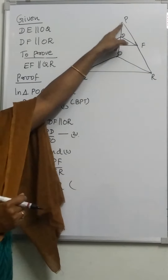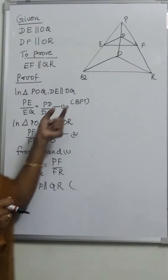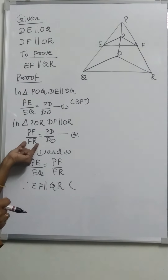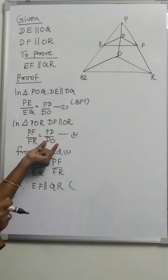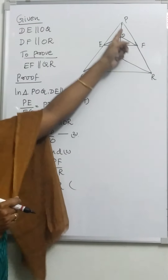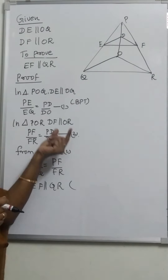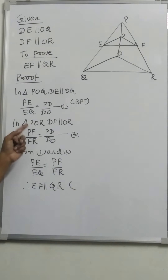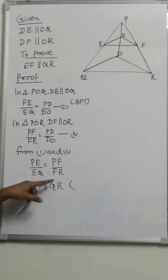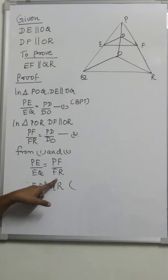In triangle POR, PF by FR is equal to PD by DO — that is equation 2. From equations 1 and 2, we can write PE by EQ is equal to PF by FR.